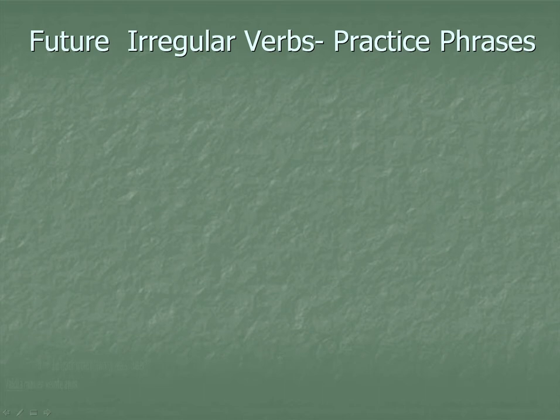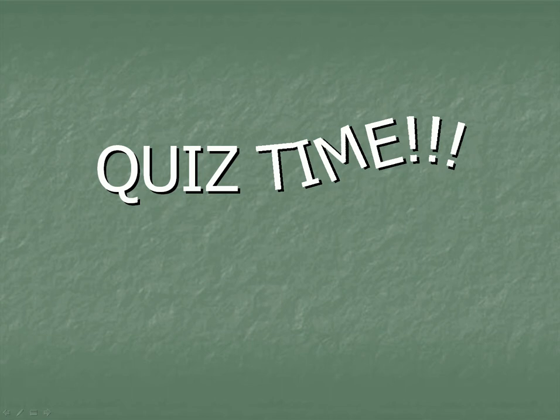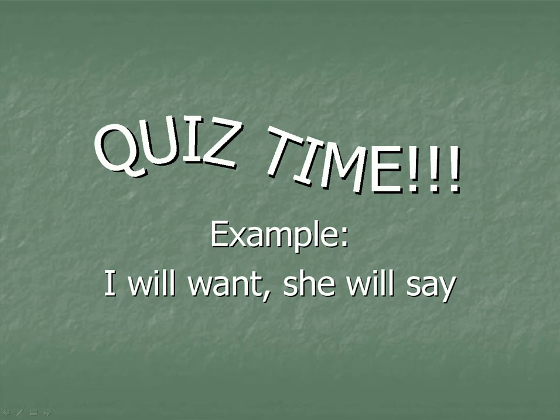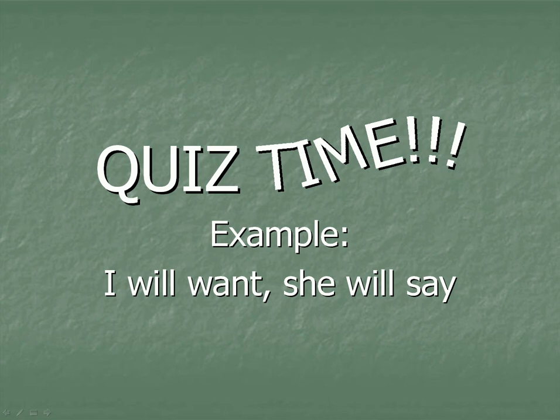Alright, I want to go over a quiz to test what you've learned. You're going to see prompts like 'I will want' or 'she will say.' I'll give you a couple of seconds and then display the answer. If you see the singular pronoun 'you,' there are going to be two answers: tú and usted. For example, the answer to 'I will want' is querré, and 'she will say' is dirá.